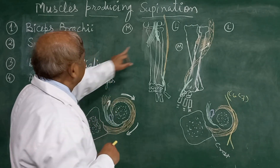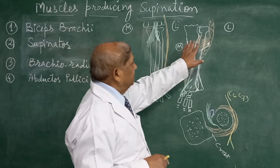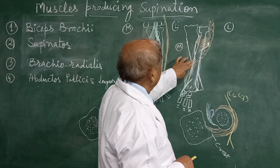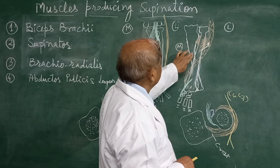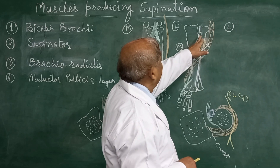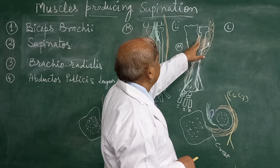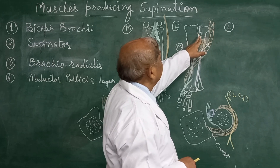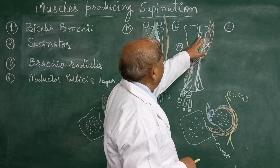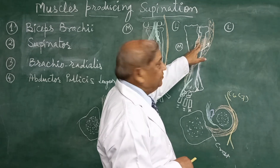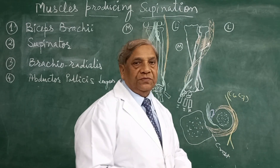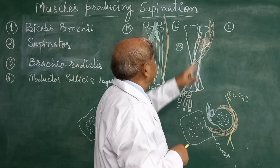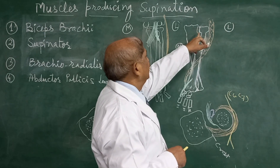The second muscle is the supinator muscle. As we are seeing in this pronated arm, the supinator crest of the ulna is here. The fossa is below the supinator crest and in front of that. The fibers of the supinator take origin from the supinator crest and the fossa in front of it, just below the radial notch of the ulna.